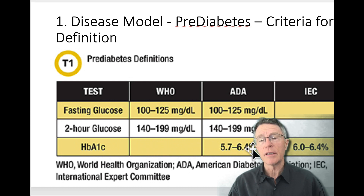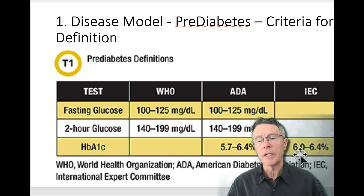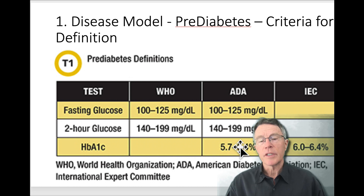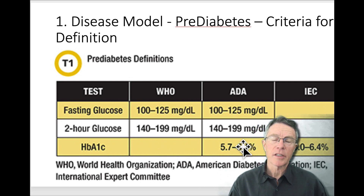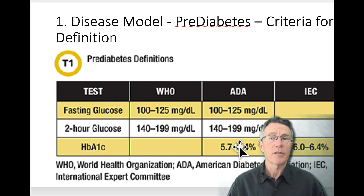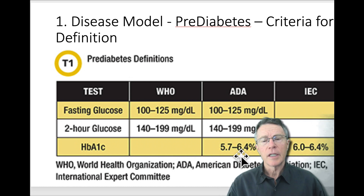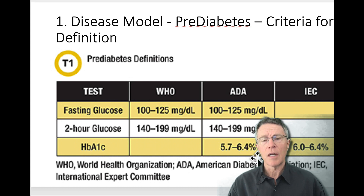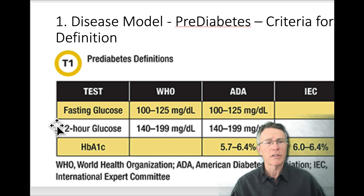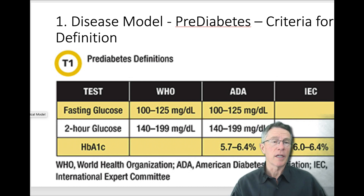Hemoglobin A1c is another difference. The IEC, the International Expert Committee, says 6.0 and above. The ADA says 5.7 and above. Myself and a lot of others would say anytime you get above 5, this process is getting started. Both of these organizations stop at 6.4 because at 6.5 and higher, they say that's frank or full-blown diabetes.